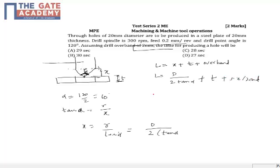So if I calculate this, the diameter is given as 20mm by 2, 2 tan 60, plus the thickness is again 20 plus the overband which is given of 2mm. So this if I calculate, I am getting 29.77mm, so 29.77 is the total length of the travel.